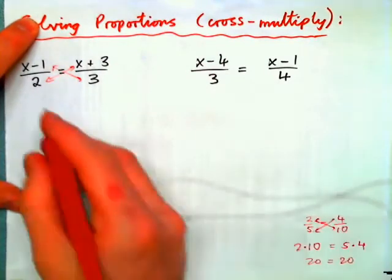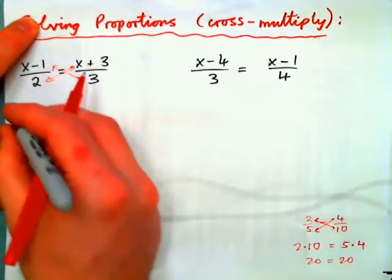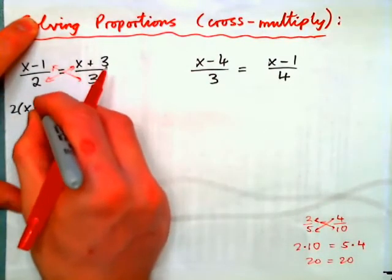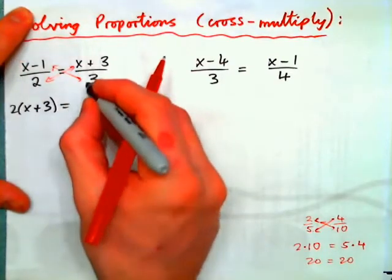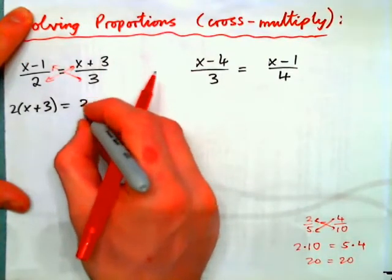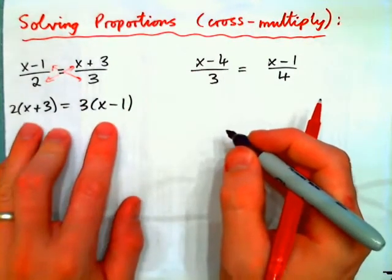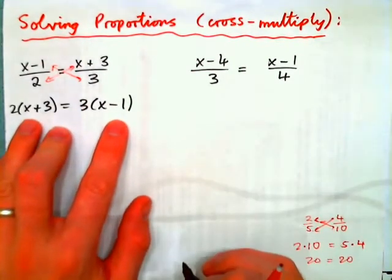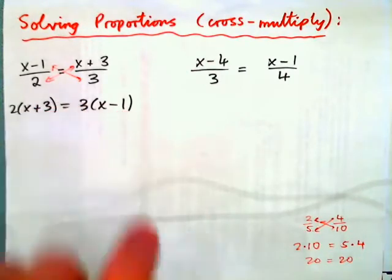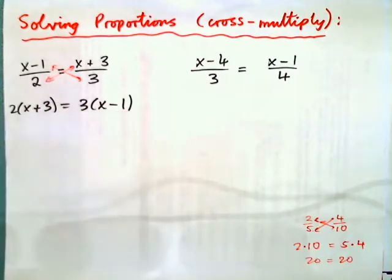So I can go 2 times x plus 3, 2 times x plus 3 equals 3 times x minus 1. 3 times x minus 1. Where did the parentheses come from? Question. Well, let's think about it. It's very important.